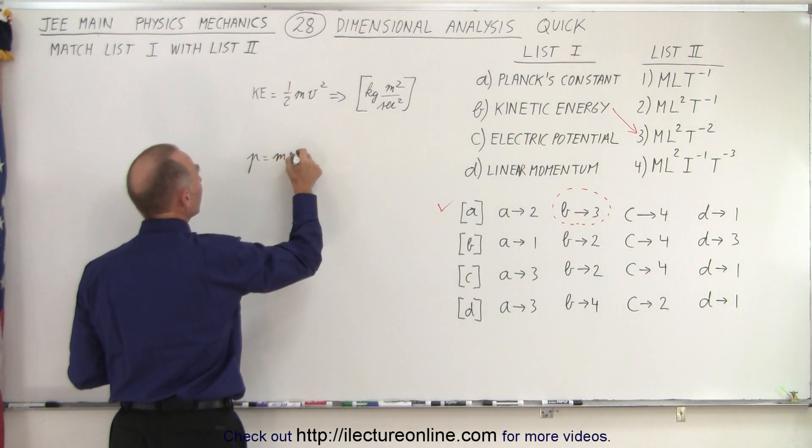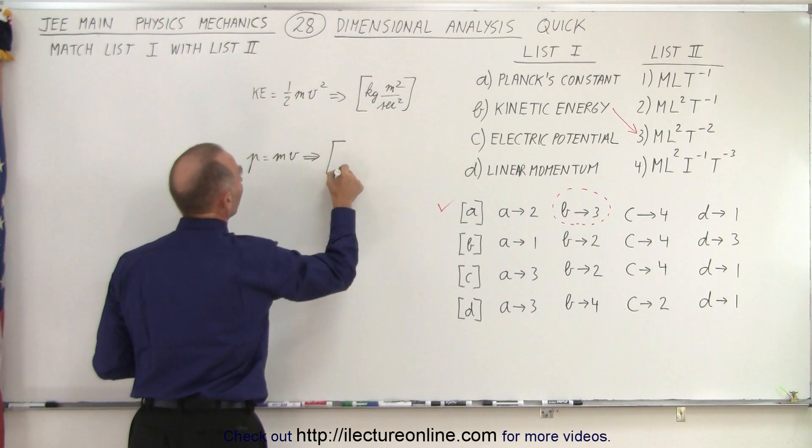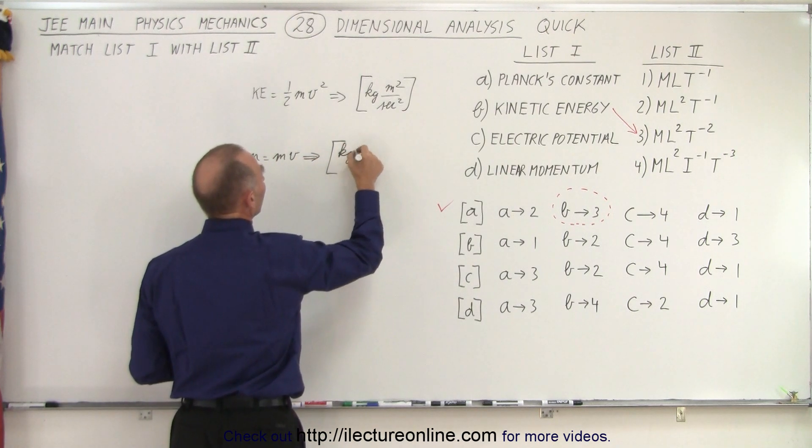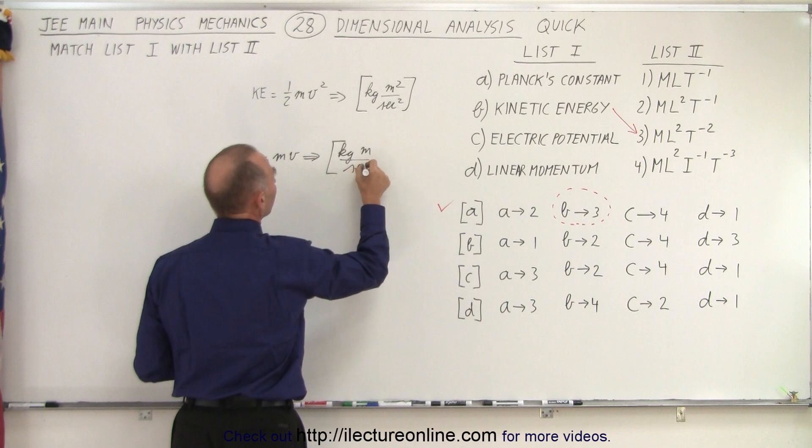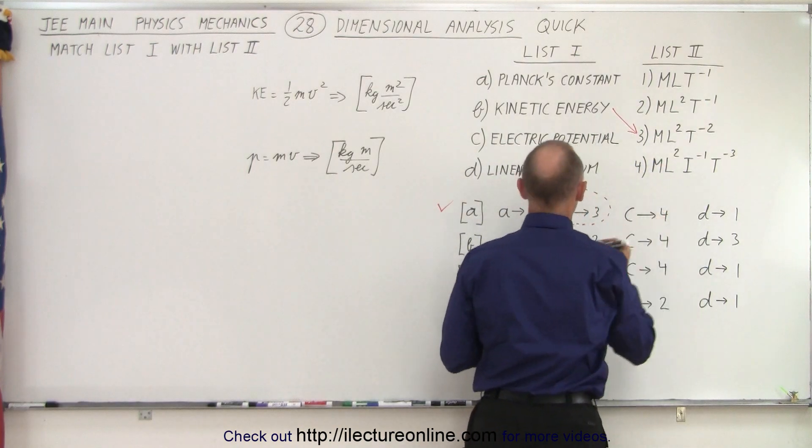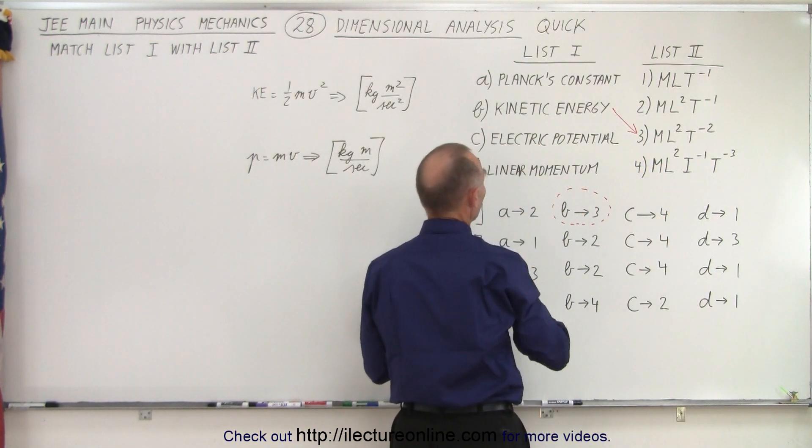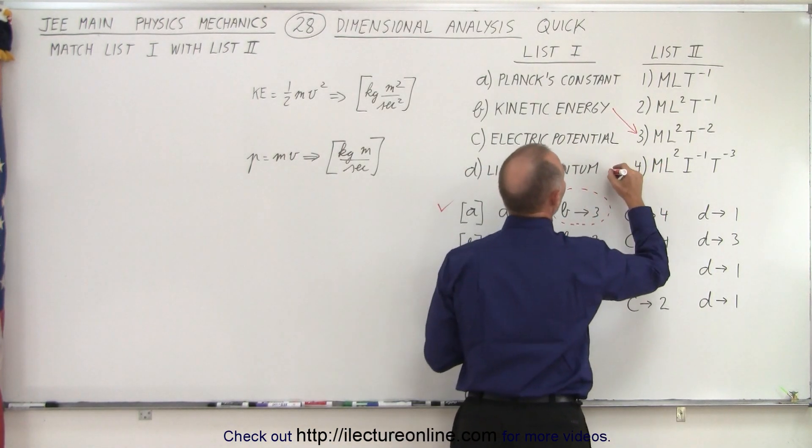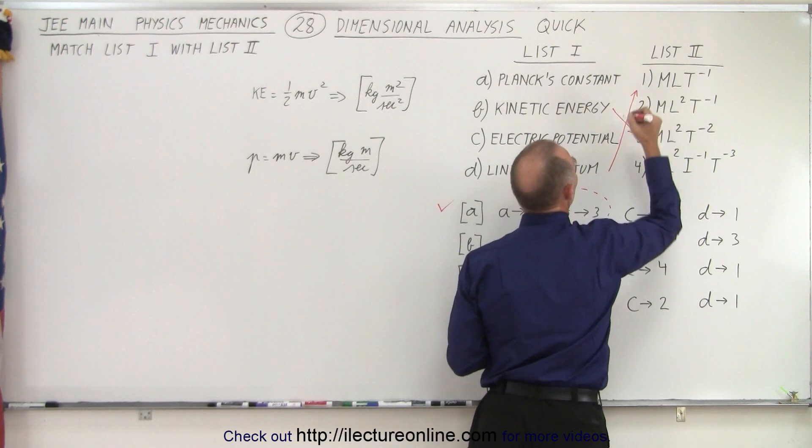P equals mv, and so unit-wise, that is kilograms meters per second. In other words, mass length divided by time, which is right here. Mass length divided by time, which means that number 4, or D, linear momentum, matches up with number 1.